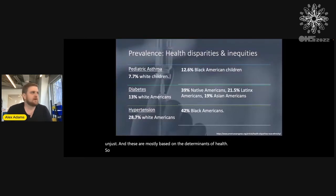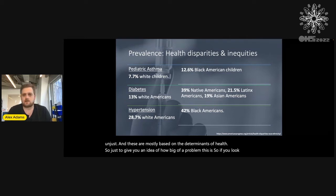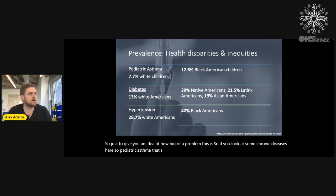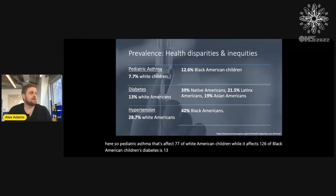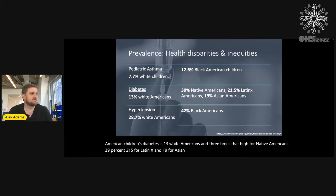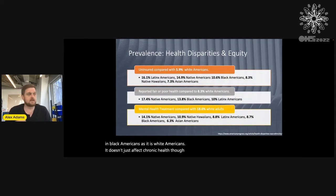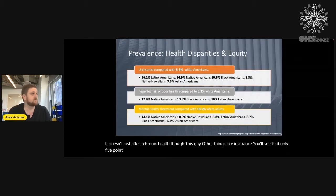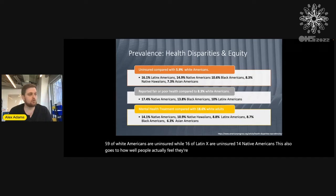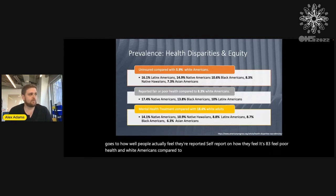To give you an idea of how big a problem this is: pediatric asthma affects 7.7% of white American children, while it affects 12.6% of black American children. Diabetes is 13% in white Americans and three times that high for Native Americans at 39%, 21.5% for Latinx, and 19% for Asian Americans. Hypertension is almost twice as high in black Americans as in white Americans. Only 5.9% of white Americans are uninsured, while 16% of Latinx and 14% of Native Americans are uninsured. Self-reported poor health is 8.3% in white Americans compared to 17% in Native Americans.